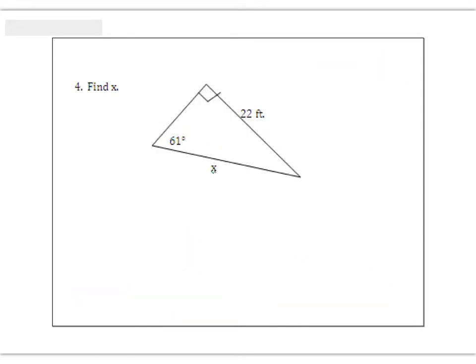Before we try this one, think about this: could we do this problem with the Pythagorean theorem — A squared plus B squared equals C squared? The answer is no, because to use Pythagorean theorem, we need at least two of the sides of a right triangle. So up until section 8.4, we wouldn't have been able to solve this problem. But now with SOHCAHTOA and trigonometry, we have a method. Go ahead, pause the video, try this problem, and then check your answer.